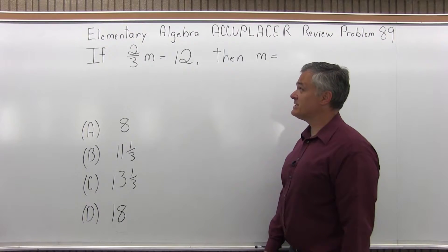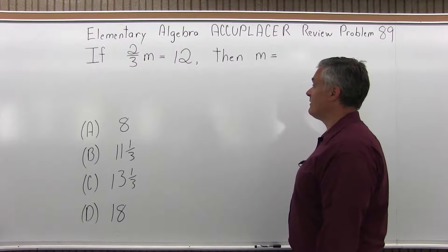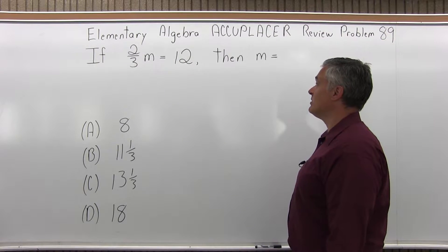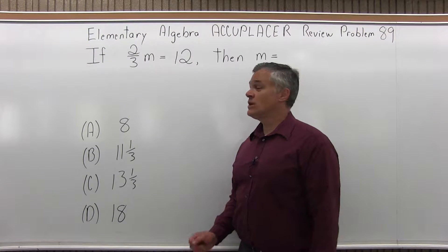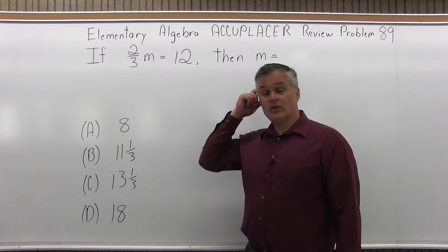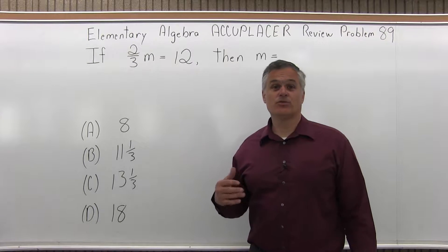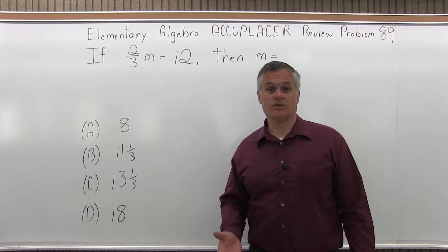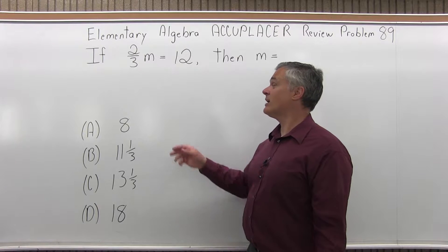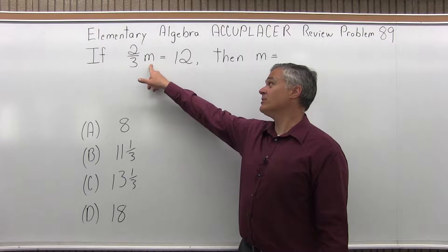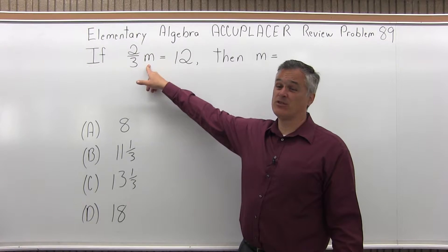It says if two-thirds m equals 12, then m equals what? This is an equation — we can do anything we want as long as we do the same thing on both sides. What do we want to do? I want m equals, not two-thirds m — I want to get rid of that two-thirds.